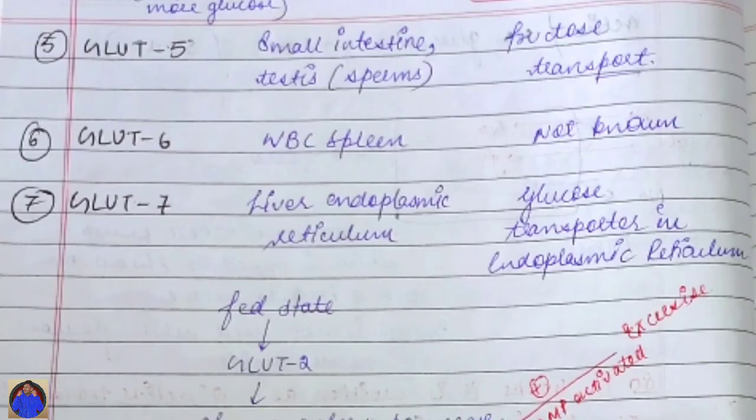GLUT5 is located in the small intestine and testes, and its function is fructose transport. GLUT6 is located in WBCs and spleen, and its function is not yet known. GLUT7 is located in the liver endoplasmic reticulum, and its function is glucose transport in the endoplasmic reticulum.